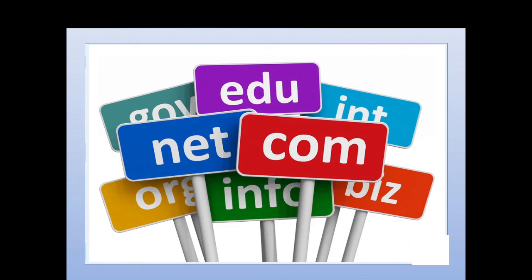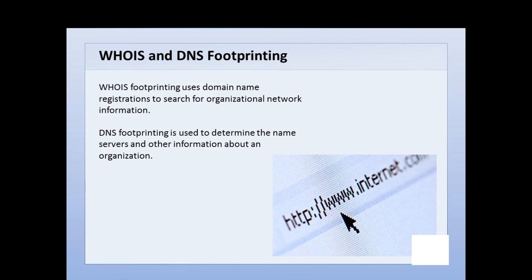The next topic covers WHOIS footprinting and DNS footprinting. These two types of footprinting can give you information about an organization's network. What you may find is the domain name of the organization through their domain name registration, and this would give you information about their IP address space, possibly who the registrar is, a point of contact with the organization, and sometimes even an address and phone number.